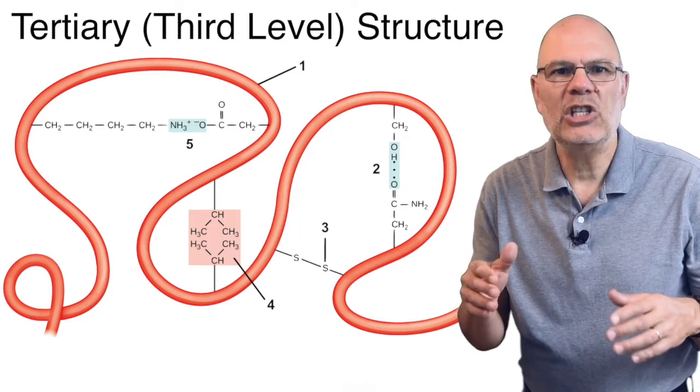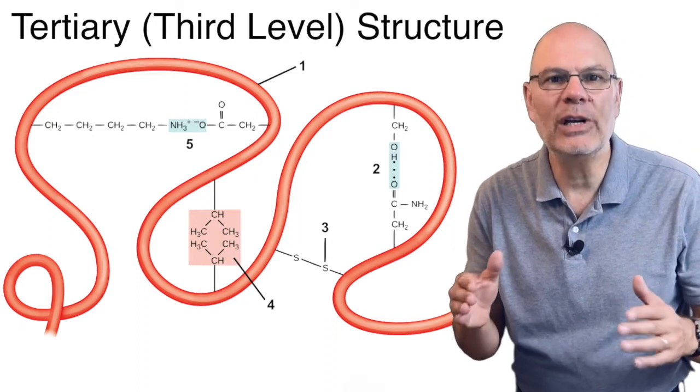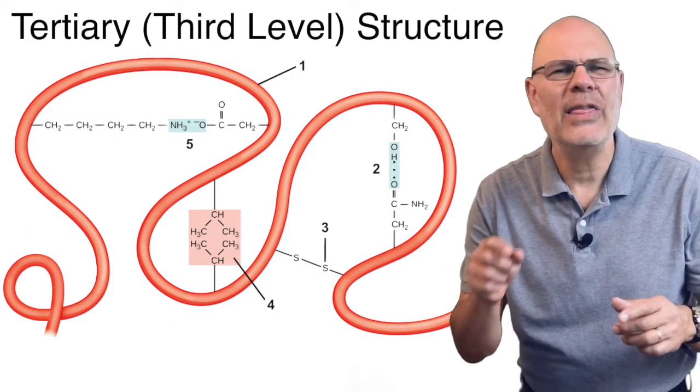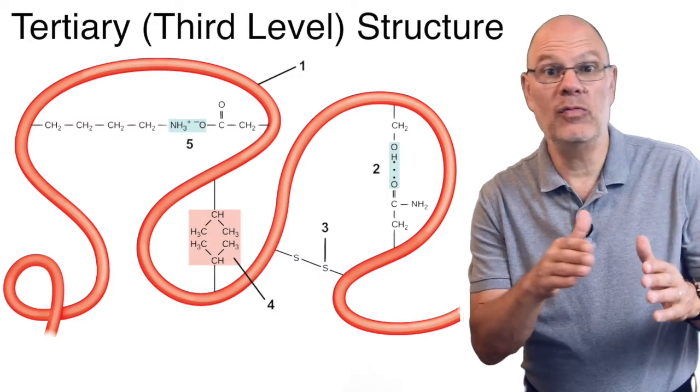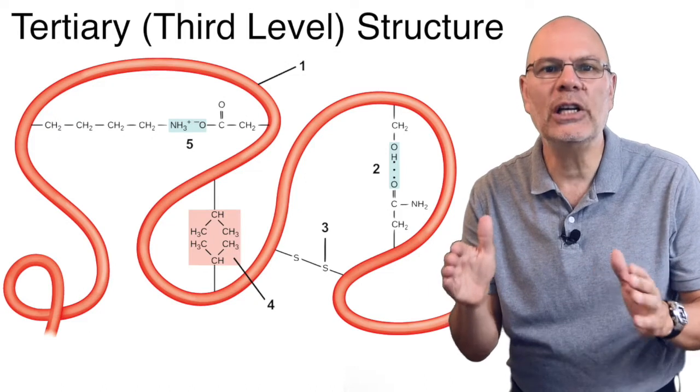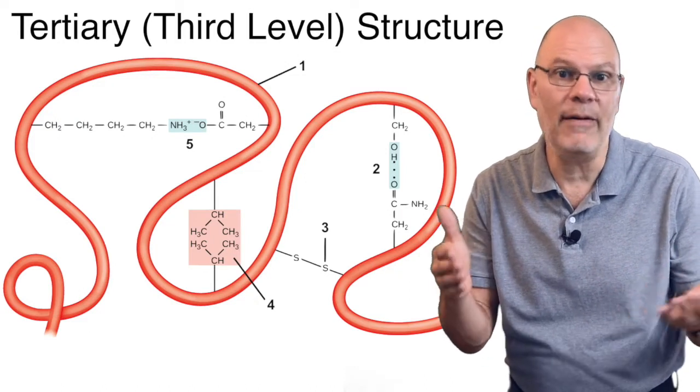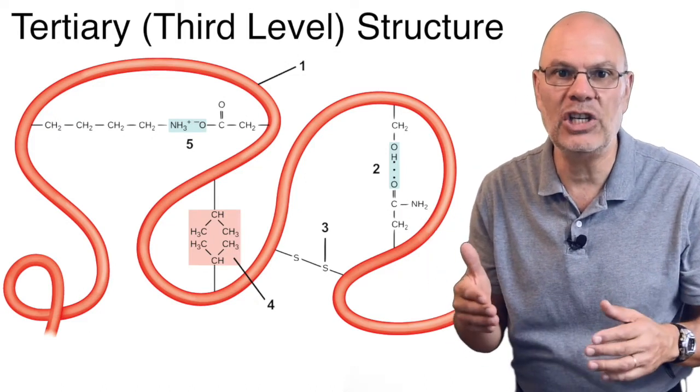This causes the polypeptide chain to twist and bend, and that can bring sections of the polypeptide that are far away from one another in terms of sequence, spatially close to one another, so that you can have structures like beta pleated sheets.